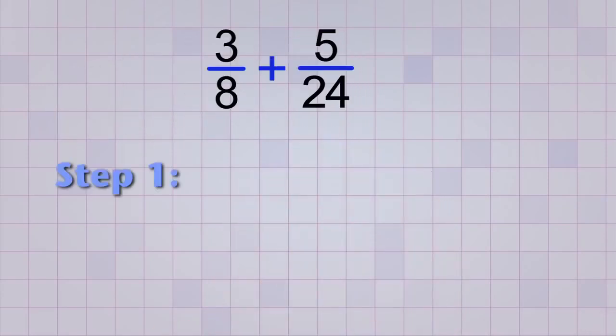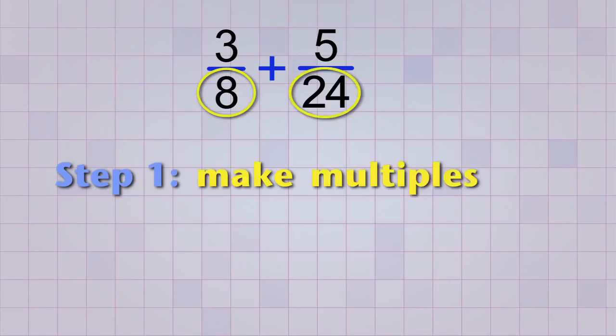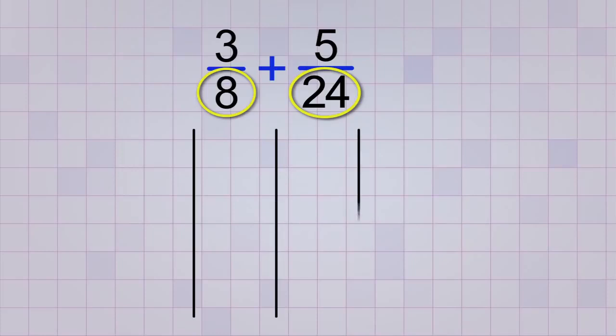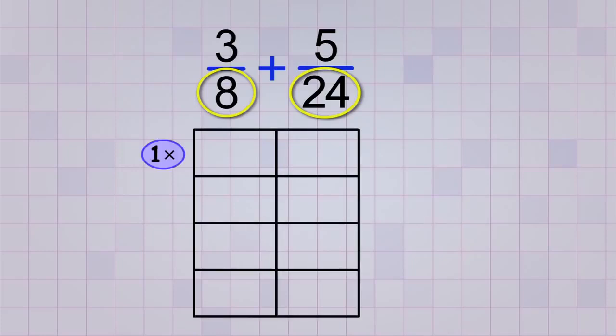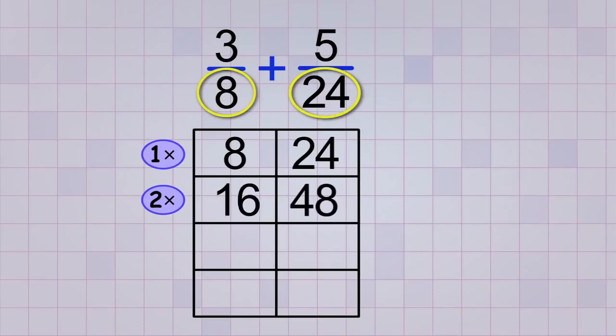Let's start with this problem: 3 over 8 plus 5 over 24. Step 1 is to take our two bottom numbers and make multiples of them to see if we can find a common multiple. First, let's multiply them both by 1. Well, that's easy! We have 8 and 24. Next, we multiply them both by 2, and that gives us 16 and 48. I still don't see anything in common, so let's multiply them both by 3. 3 times 8 is 24, and 3 times 24 is 72.